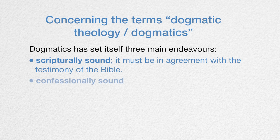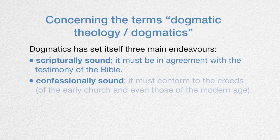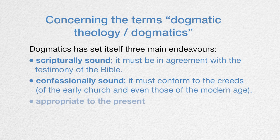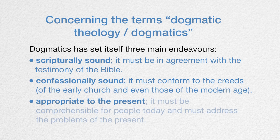Second, it must be confessionally sound — it must conform to the creeds of the early church and possibly the modern age, depending on the denomination. Like the early church creeds of Nicaea and Constantinople, where the doctrine of the Trinity was established, dogmatics must be in conformance with those early church creeds, which are universally accepted by churches as doctrinally binding. Third, dogmatics must also be appropriate to the present — comprehensible for people today, addressing current problems and remaining relevant.